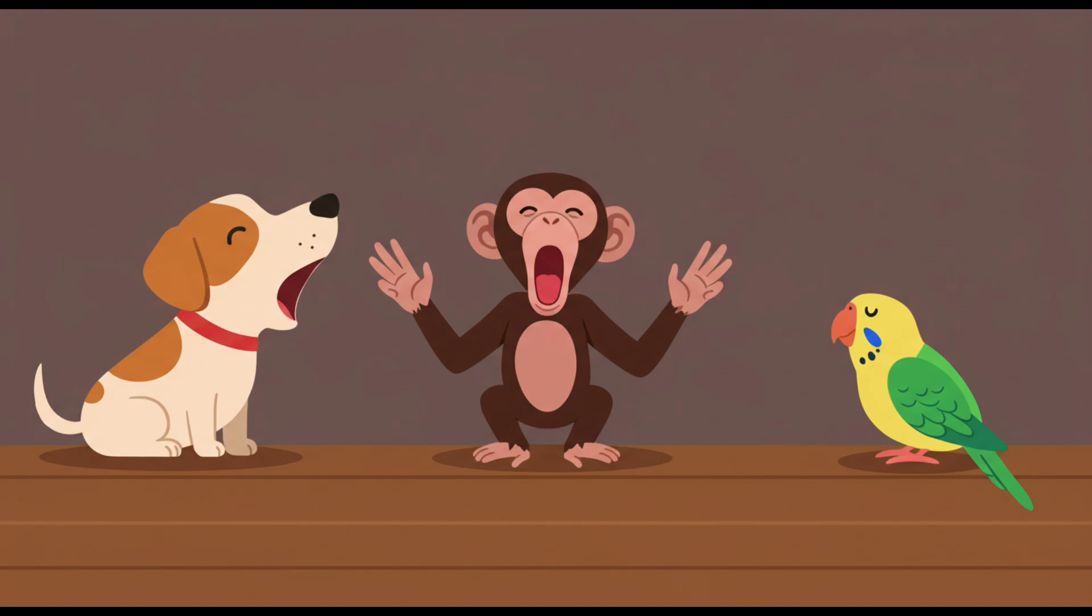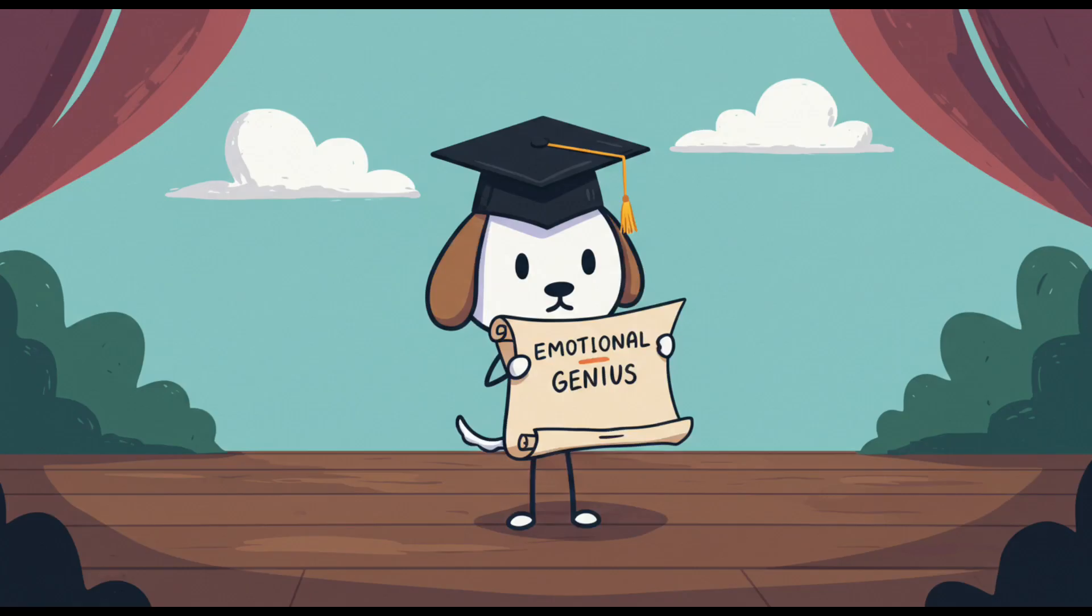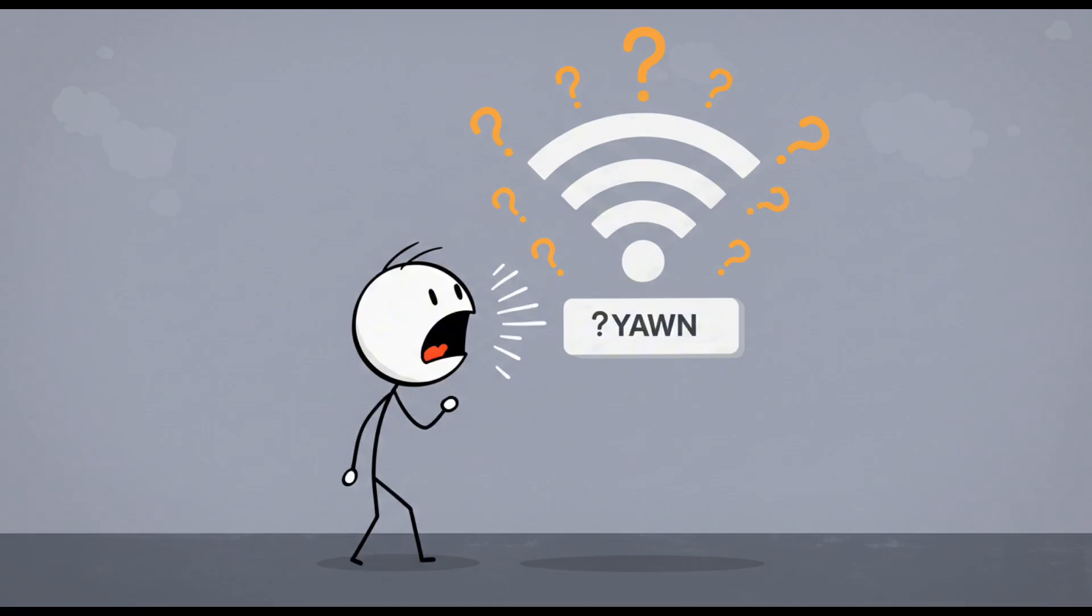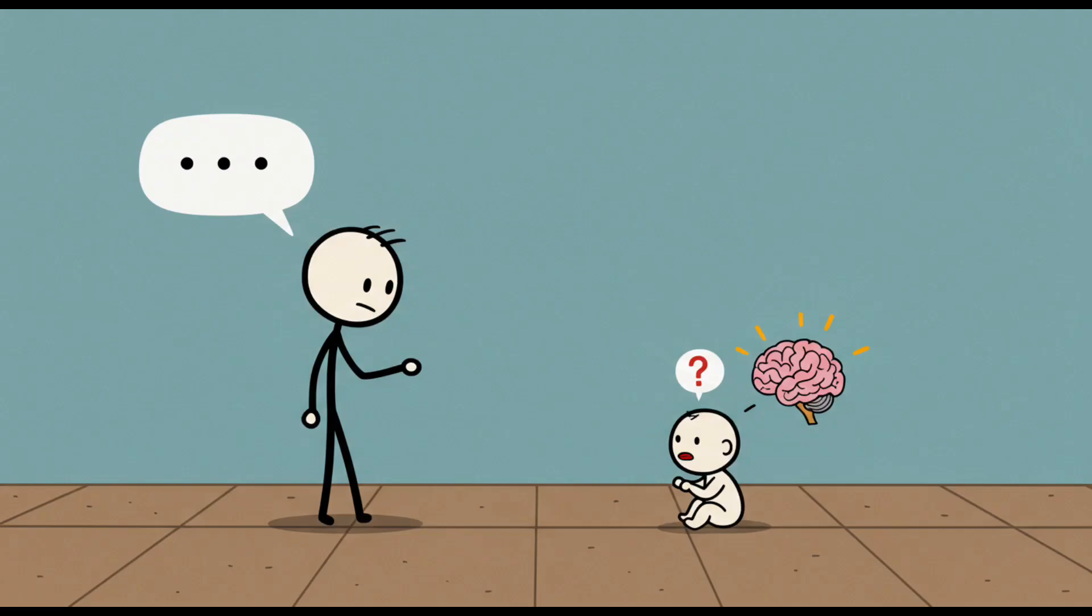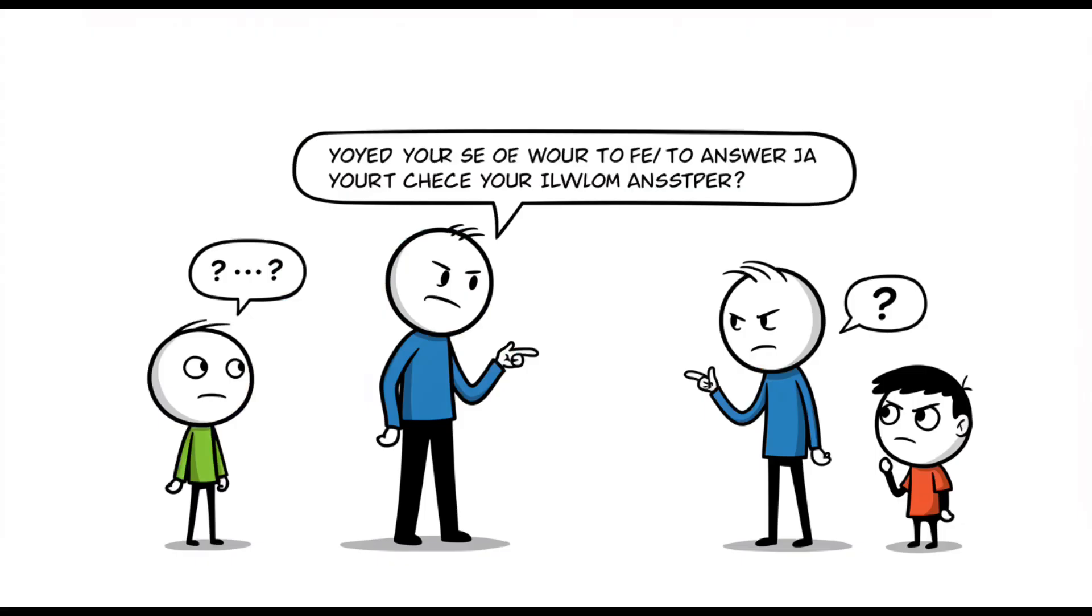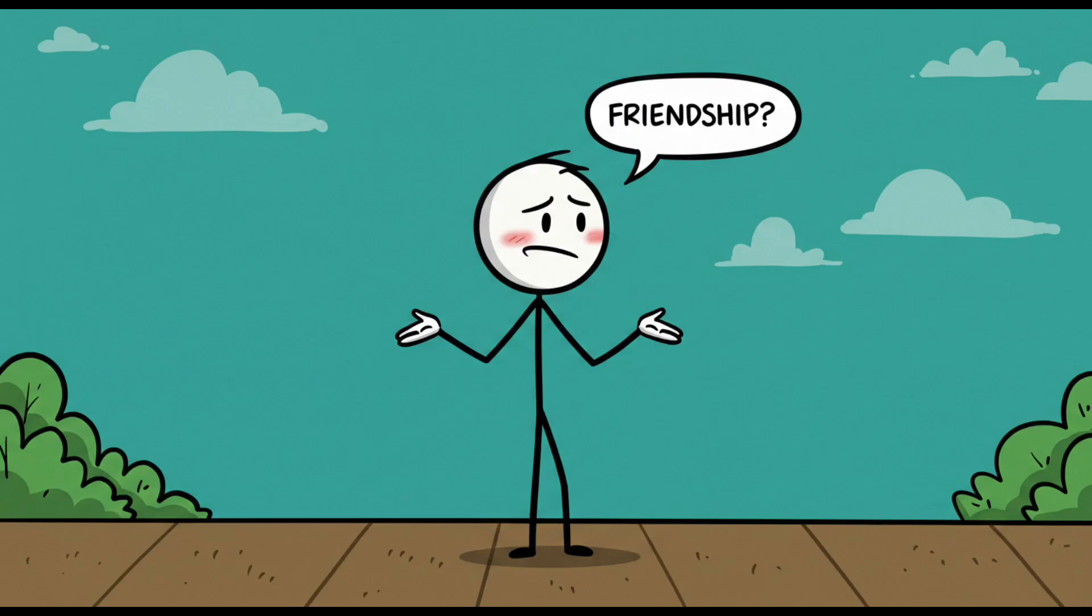But then dogs, chimps, and even parakeets yawn contagiously too, so either they're all emotional geniuses, or yawns are just universal Wi-Fi signals we can't explain. And try explaining that to a kid. 'We yawn because our brains get hot.' 'So why do babies yawn? Their brains are tiny.' 'Okay, we yawn because it's contagious.' 'But why do we catch it?' 'Uh, friendship?'